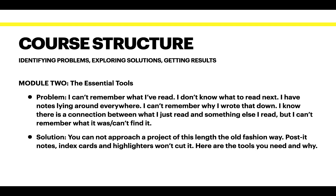In module two, we'll talk about the essential tools you'll need to complete this course — Roam Research is obviously the number one tool. The problem is: you can't remember what you read, you don't know what to read next, you have notes lying around everywhere, you can't remember why you wrote something down, and you know there's a connection between things you've read but can't find it. The solution is you cannot approach a project of this length and size the old-fashioned way — post-it notes, index cards, and highlighters just won't cut it. Module two covers the tools you need and why.